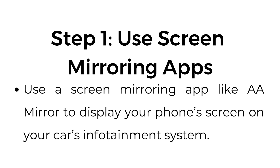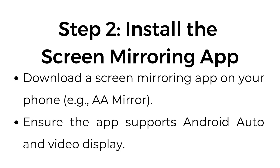Method number two, Step number one: use screen mirroring apps. Use a screen mirroring app like AA Miro to display your phone's screen on your car's infotainment system.